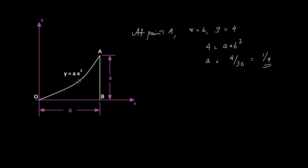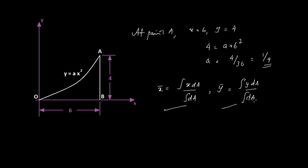Now you need to consider an infinitesimal strip in order to find the centroid. The coordinates of the centroid can be calculated by X̄ = ∫X dA / ∫dA and Ȳ = ∫Y dA / ∫dA. If you have any confusion about how these equations are derived, please go through the video where we discuss centroid and center of gravity before proceeding. We need to consider a small strip and integrate following these equations to calculate the centroid of area OAB.